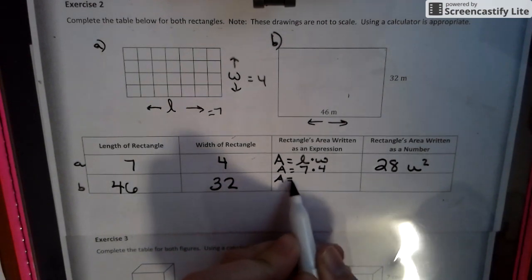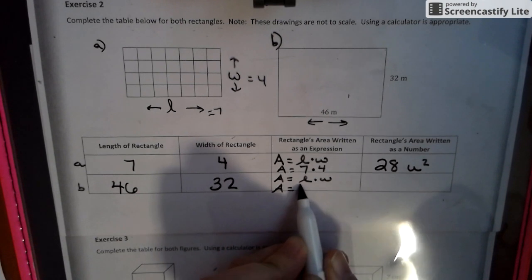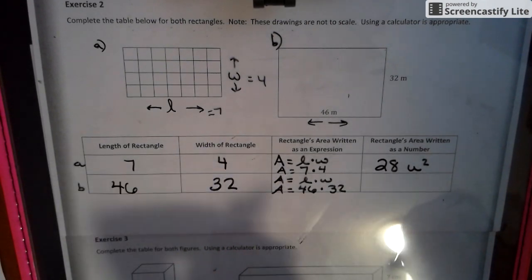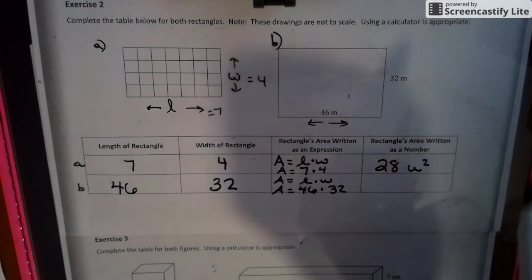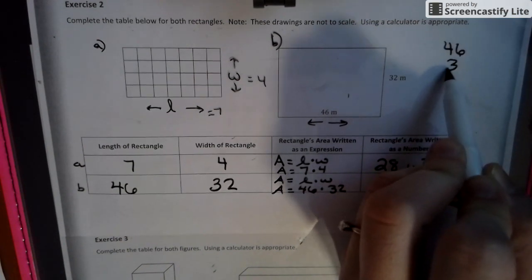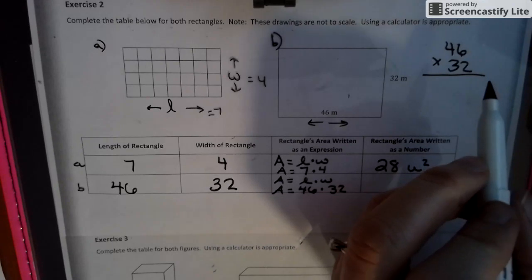We have area equals length times width, which is 46 times 32. I'm just going to put the math over here. I'm not going to talk our way through it because we know there will be a delay.